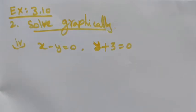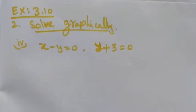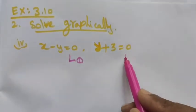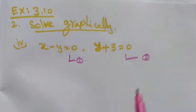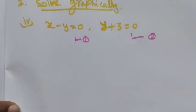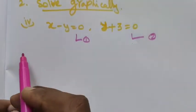Hi students, Class 9, Exercise 3.10, Question Number 2: Solve graphically the following pair of equations — x minus y equal to 0, and y plus 3 equal to 0. Let me take these as the first equation and second equation. Using these two equations, we want to find the solution.